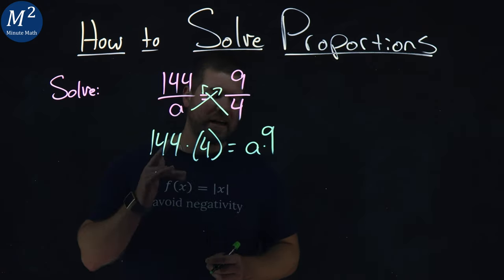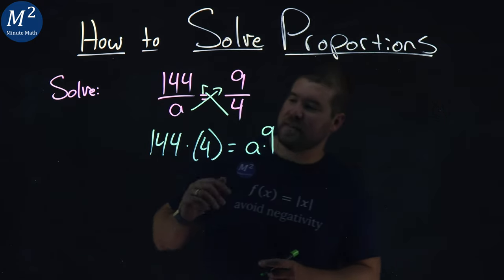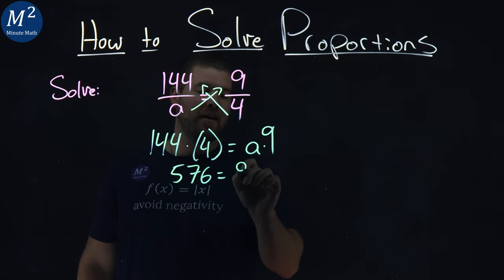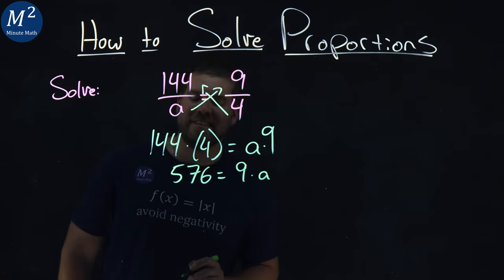Well, 144 times 4 is, I think, 576. Yes, 144 times 4 is 576, and that's equal to 9 times A. That's a little easier to see.